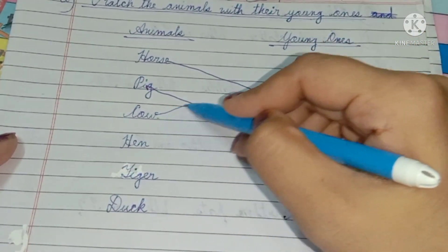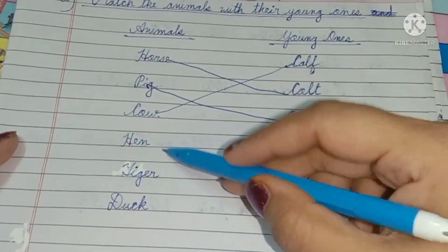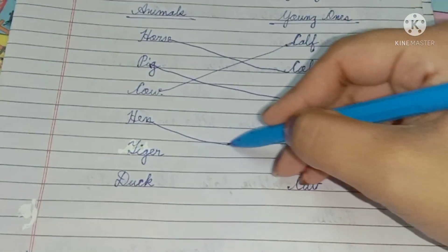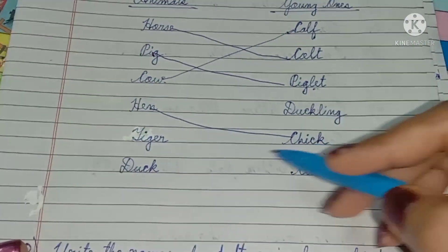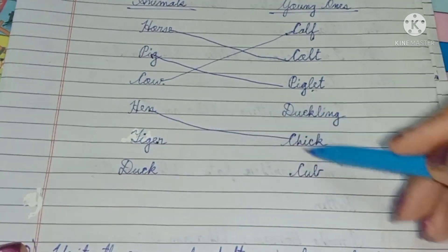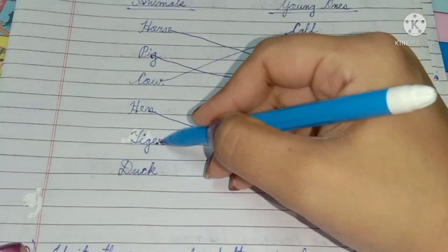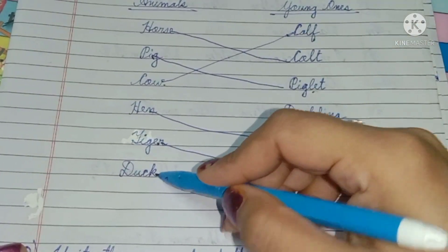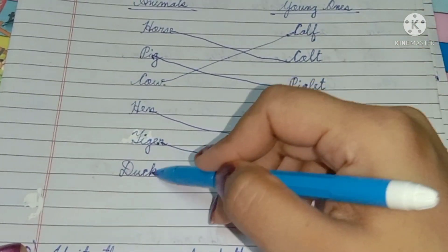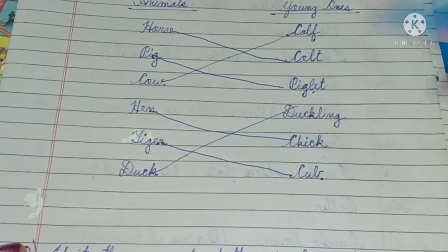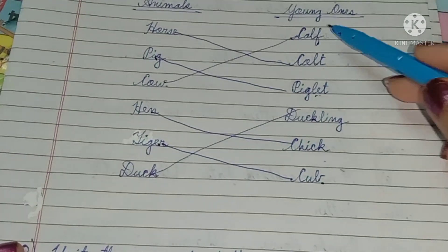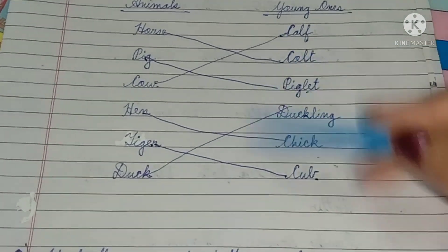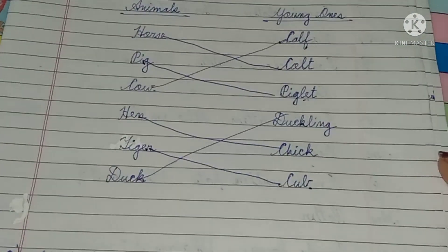Cow — calf. Hen — chick. Tiger — cub. Duck — duckling. This is how you practice matching animals with their young ones.